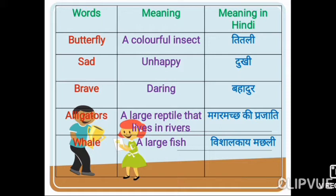A colourful insect. Butterfly means titli in Hindi. Number two: sad — S-A-D, said. English meaning: unhappy — H-A-double P-Y, unhappy. Hindi meaning: dhukhi.